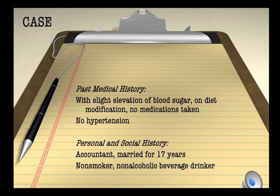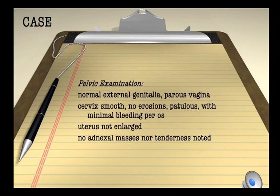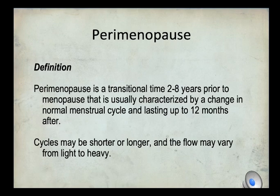Past medical history includes a slight elevation of blood sugar managed with diet modification, no hypertension. She is an accountant, married 17 years, non-smoker, non-alcoholic. Pelvic exam: external genitalia normal, vagina normal, cervix smooth, no erosions, no masses, minimal bleeding per os. Bimanual examination: uterus not enlarged, no adnexal masses, no tenderness. The patient is 46 years old, multigravid, presenting with AUB for the past 12 months.